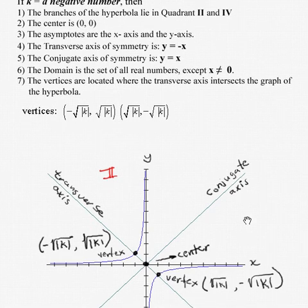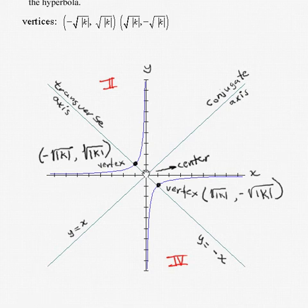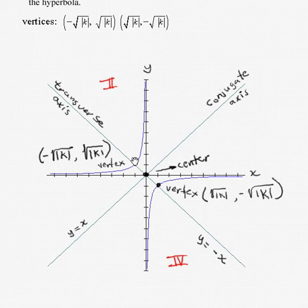Looking at this graph, remember the branches of the hyperbola are in quadrant 2 and quadrant 4. The x and y axes are still the asymptotes. The center is still (0, 0). The transverse axis is y equals the opposite of x. The conjugate axis is y equals x. The transverse axis of symmetry intersects the two vertices, and that's how we find the two vertices.